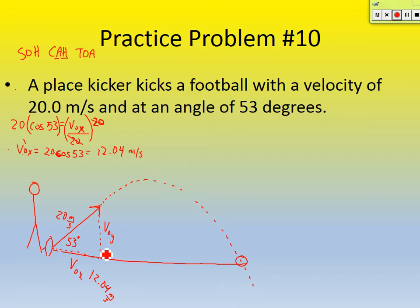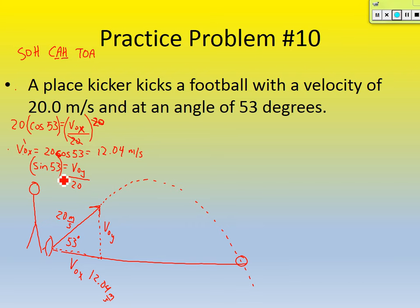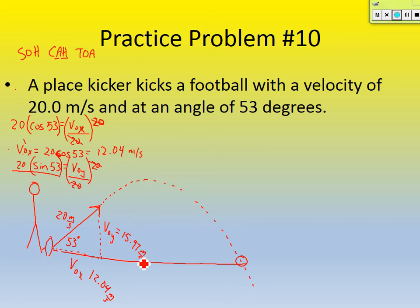Now let's solve for initial velocity in the y direction. Sine — because it's the opposite side of that triangle. So sine of 53 equals VOy divided by the hypotenuse. Opposite over hypotenuse. The hypotenuse was 20. Again, multiply both sides by 20, so VOy equals 20 times the sine of 53, which equals 15.97 meters per second. After that, it's pretty much similar to how we've done problems in the past.